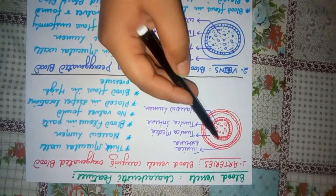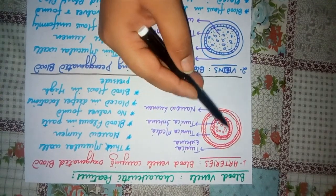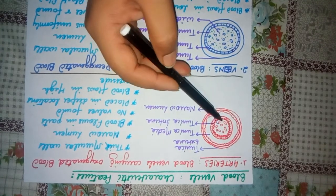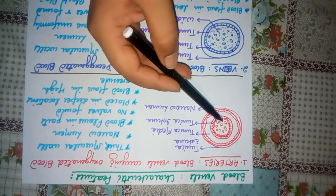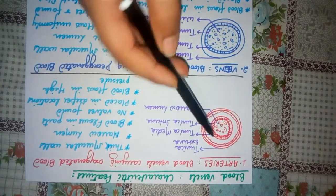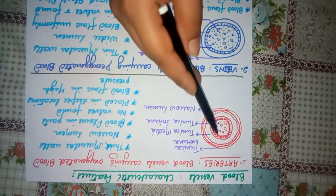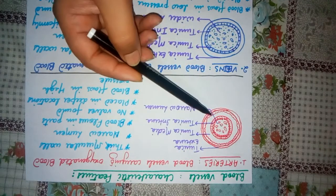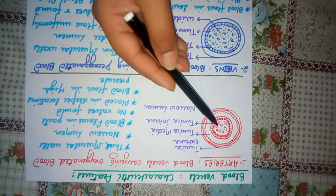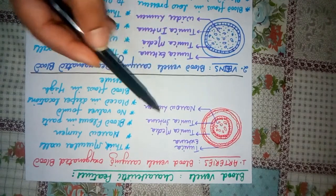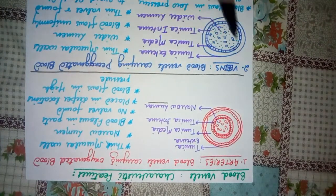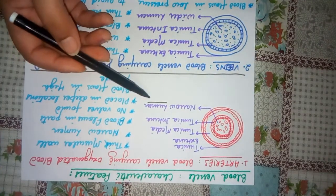This is a cavity through which blood flows. You can see blood cells in this cavity. This cavity is called the lumen. The internal cavity of any blood vessel is called the lumen.